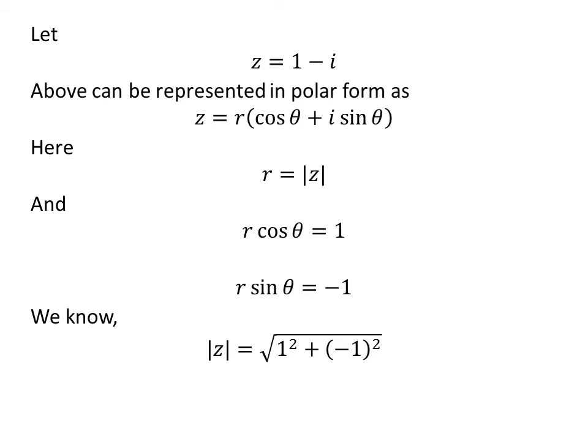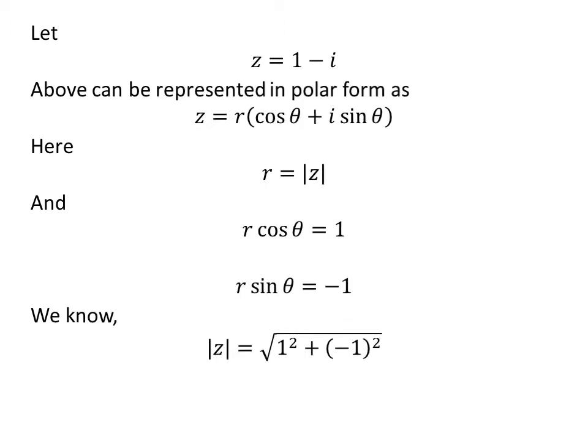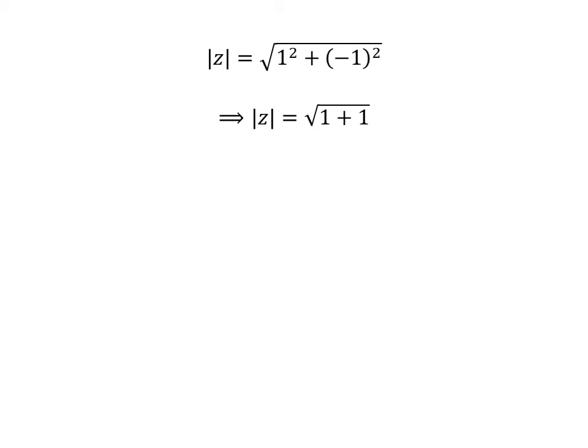As per the definition, modulus of z is equal to the square root of the square of 1 plus the square of minus 1. Since square of 1 is 1 and square of minus 1 is 1, modulus of z is equal to the square root of 1 plus 1, which gives modulus of z equal to the square root of 2, and this equals r.